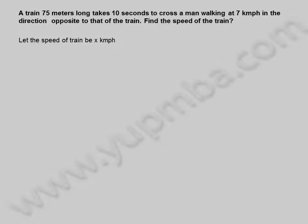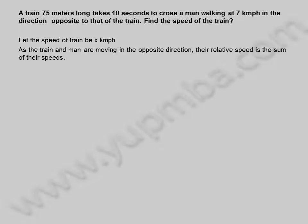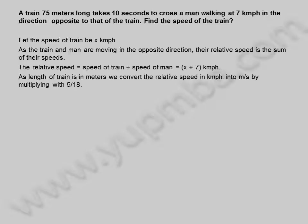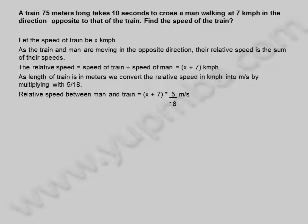Let the speed of train be x km per hour. As the train and man are moving in the opposite direction, their relative speed is the sum of their speeds. The relative speed is equal to speed of train plus speed of man, which is x plus 7 km per hour. As the length of train is in meters, we convert the relative speed in km per hour into meters per second by multiplying with 5 by 18. Relative speed between man and train is equal to x plus 7 into 5 divided by 18 meters per second.